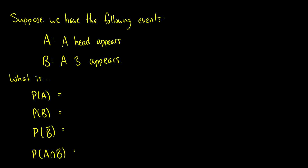Suppose we have the following events: event A says a head appears, and event B says the number three appears. What is the probability of A? Heads occurs in six out of 12 scenarios, so that's one half. Now a three appearing occurs in two out of 12 scenarios, which is one sixth, because you can only roll a number on the die and there are six possible outcomes.